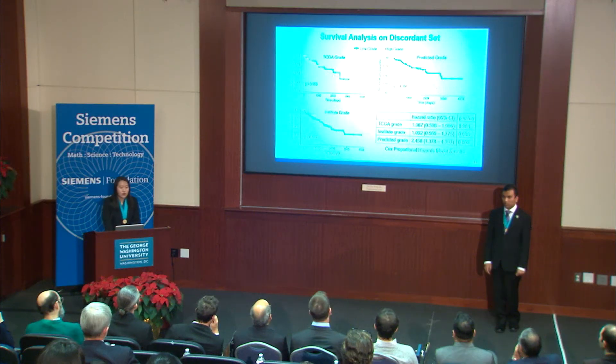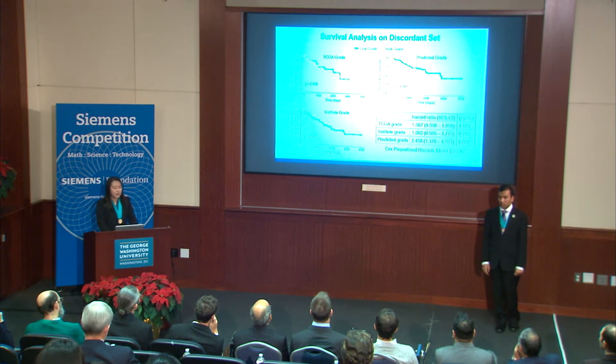We also performed survival analysis on the concordant and discordant sets separately. The concordant set consists of patients whose TCGA grade and institute grade agreed. The Kaplan-Meier curves for the concordant set show the two curves far apart, indicating our classification results were indicative of survival. On the Cox proportional hazards analysis, our predicted grade even performed slightly better than pathologists, with a hazard ratio of 1.952 as opposed to 1.917. On the discordant set, our predicted grade outperformed pathologists' manual grading in terms of prognosis results.